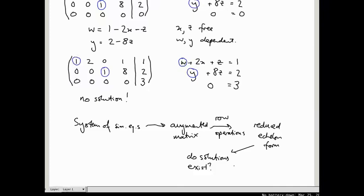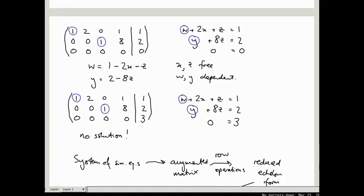And if so, so if the solutions do exist, we can just write down the solution in the way that we did in the other two examples with free variables and dependent variables. If there are no free variables then there's exactly one solution.